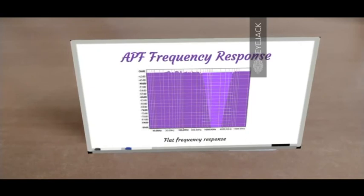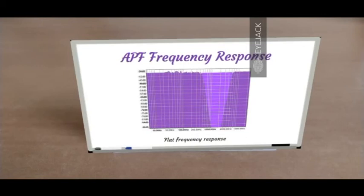Now let's look at the frequency response. As far as the frequency response is concerned, it's going to pass all the frequencies. This is how a typical frequency response would look — it passes every single frequency without any attenuation, without any boost, all the way from 20 Hz to 20 kHz if we are considering the audio spectrum.